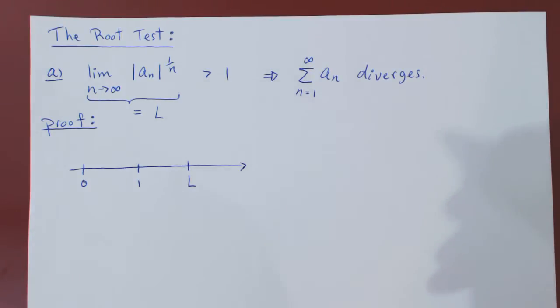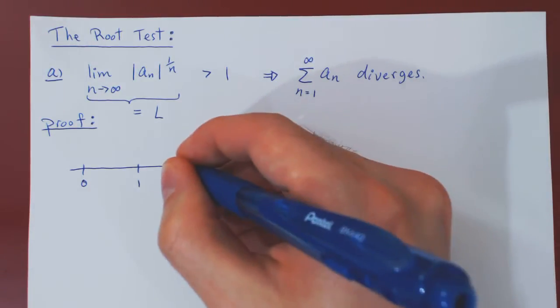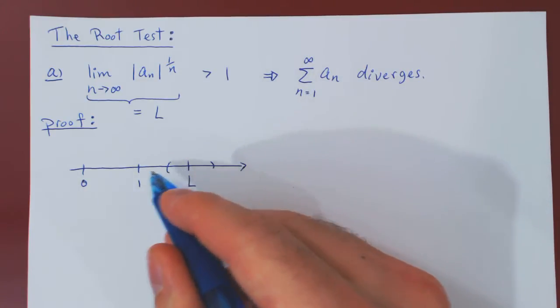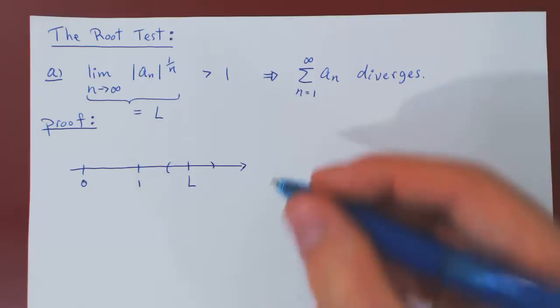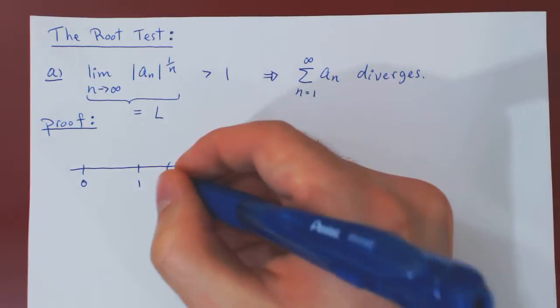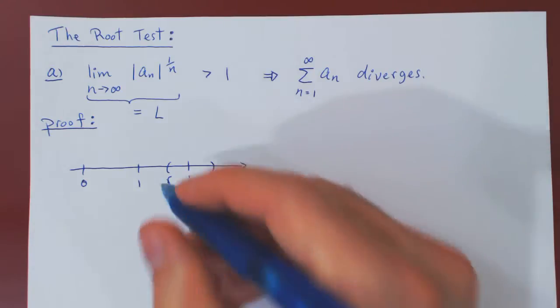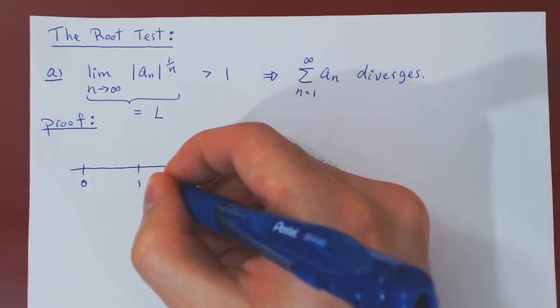Now let's construct a small interval around L, small enough that its left-hand point is still larger than 1. Call the left-hand point R and the right-hand point S. The key is that R is still larger than 1.